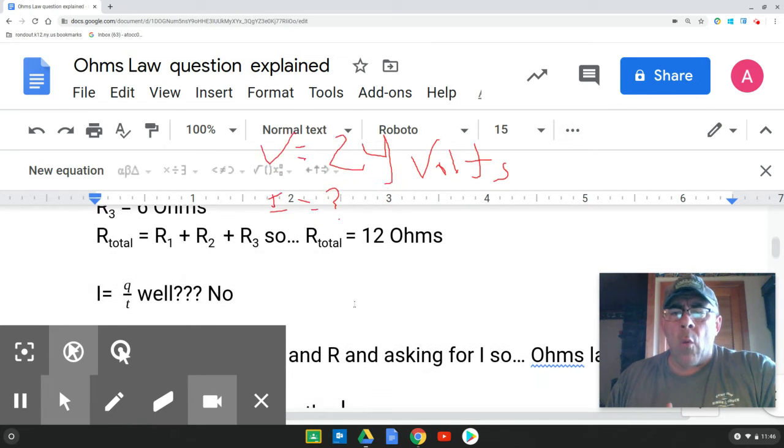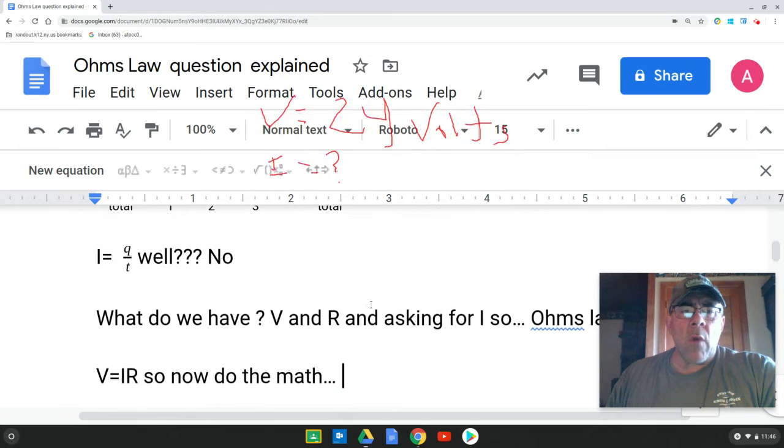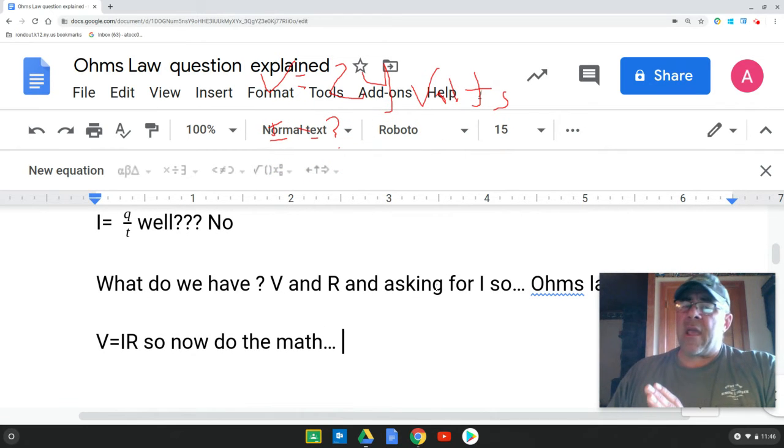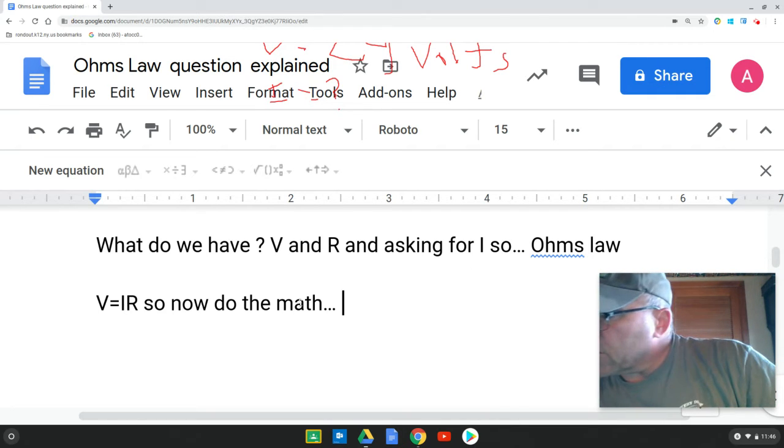We look up here. They didn't give me coulombs. They didn't give me time. So I guess I equals Q over T isn't going to do it for us. But what do I have? Well, I have voltage and I have resistance. So how about Ohm's law. V equals IR.